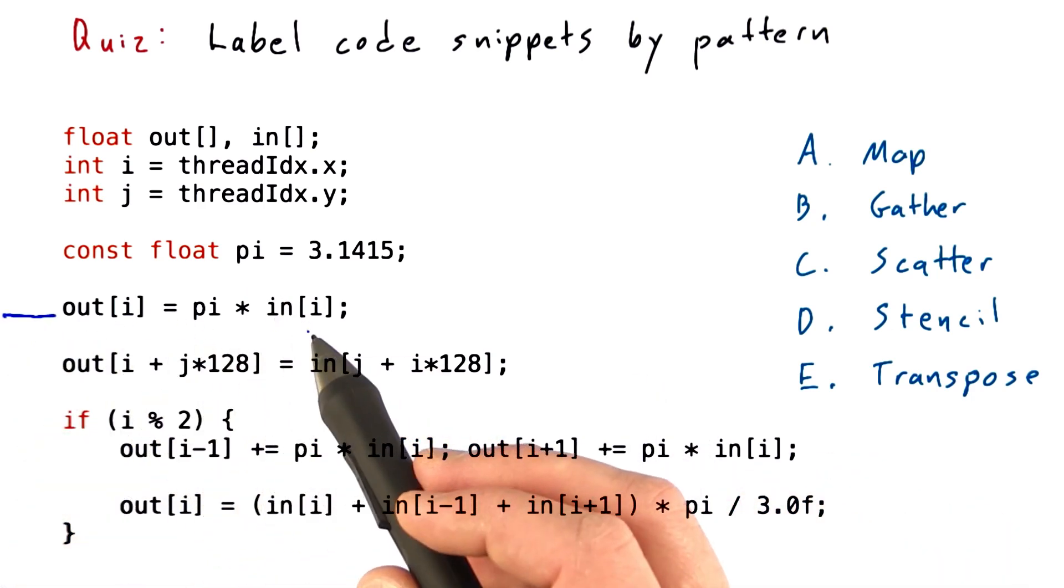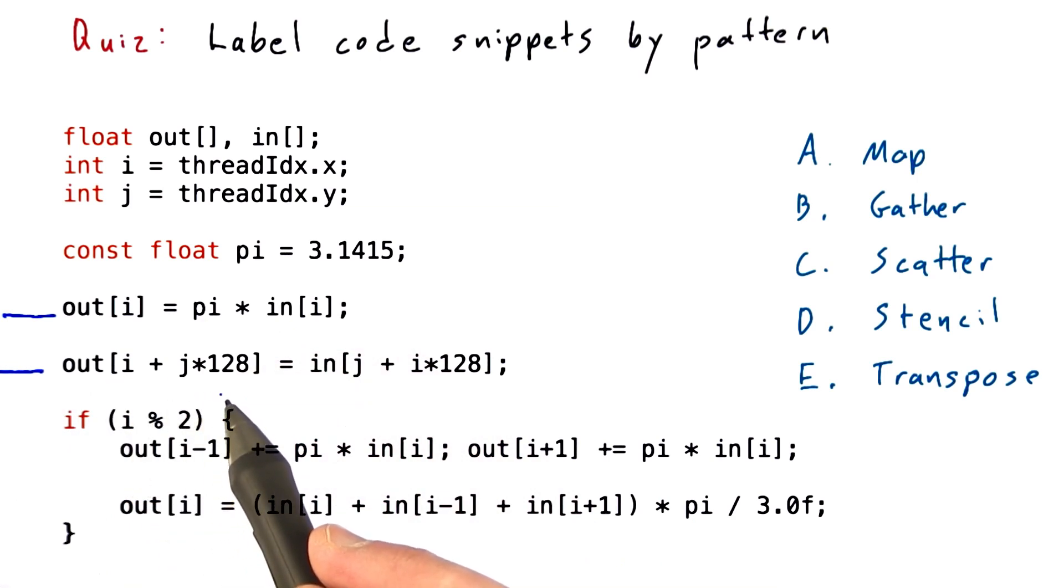out[i] equals pi times in[i], out[i + j*128] equals in[j + i*128],